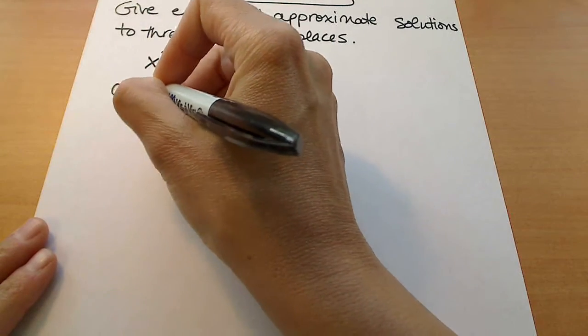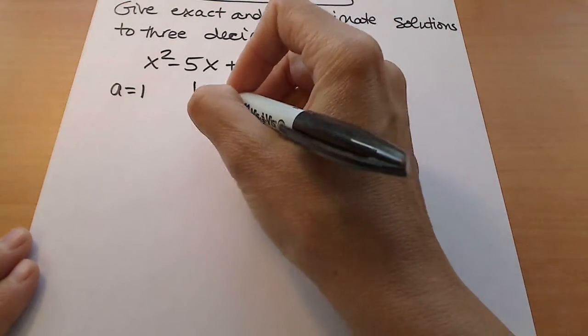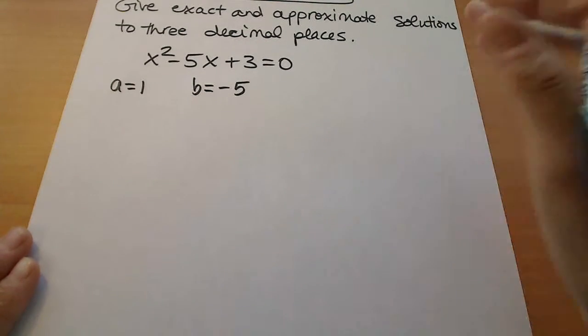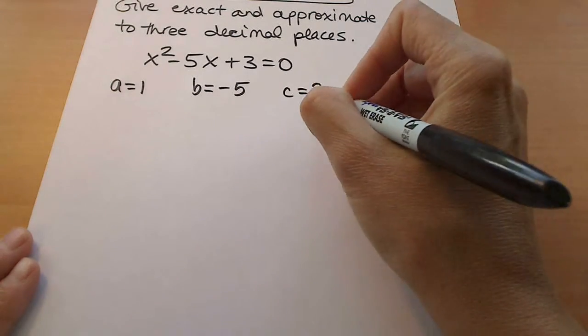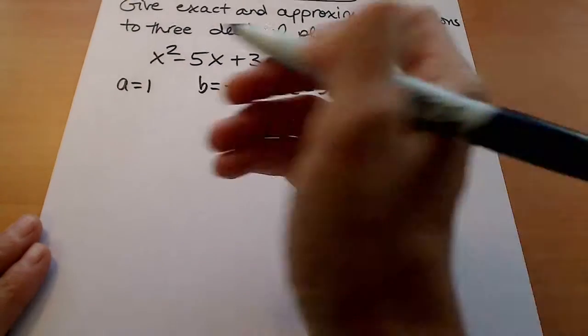We're looking here at the coefficient of the x squared term being a 1. The coefficient of the x term being negative 5, so that's a b of negative 5. And our c here in the formula would be 3, that's our constant term.